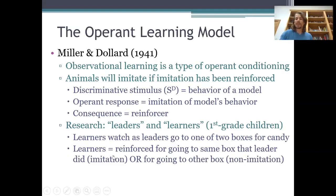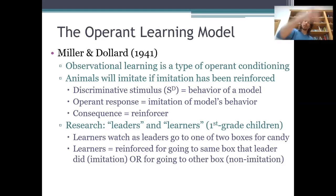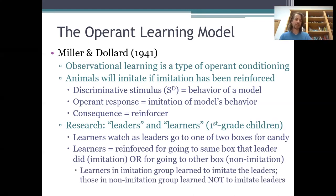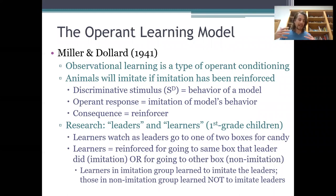Half of the learners got reinforced with candy if they made the same choice as the leader — so those kids got reinforced for imitating the model. The other half of the learners got reinforced if they chose the other box, the one the leader hadn't chosen, so those kids got reinforced for non-imitation. After a few trials, the kids in the imitation group were consistently copying the leader's choices, and the kids in the non-imitation group were consistently doing the opposite. So the leader's behavior acted as a discriminative stimulus for the learner — whatever the leader did signaled to the learner what they should do to get reinforced.